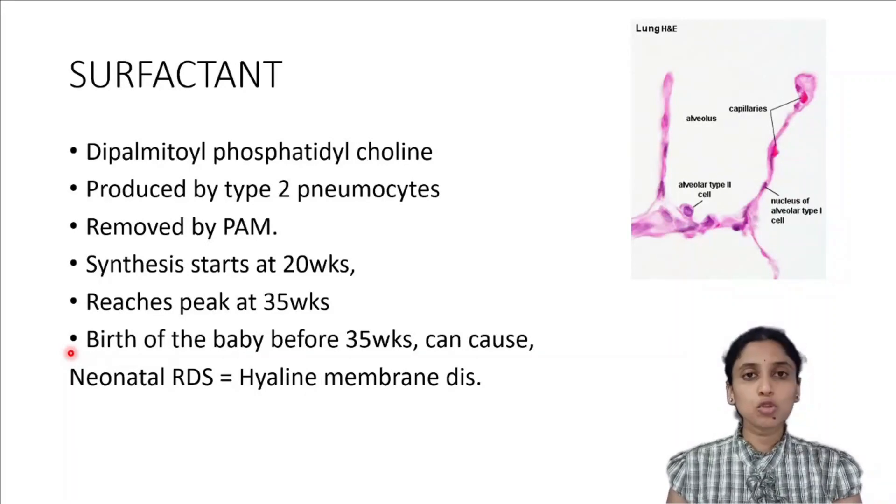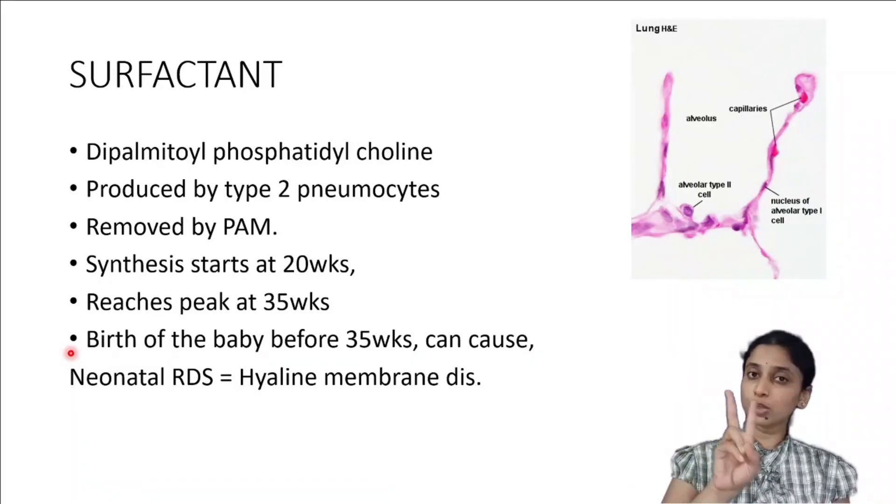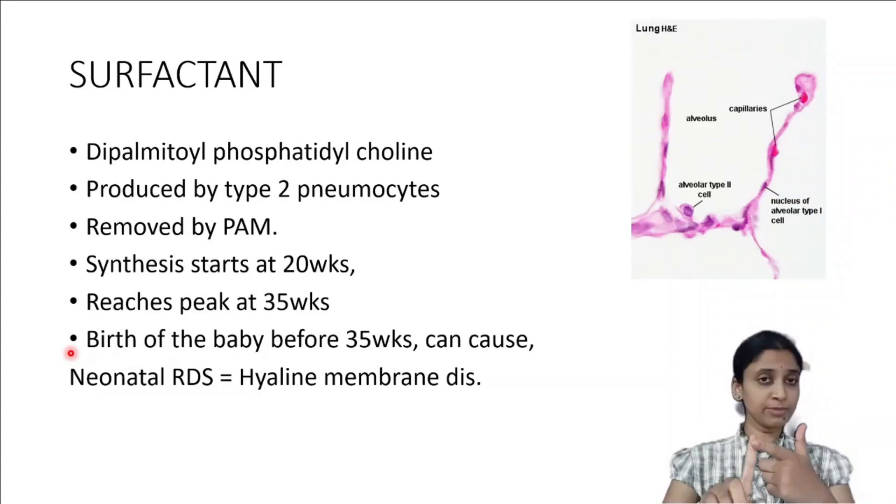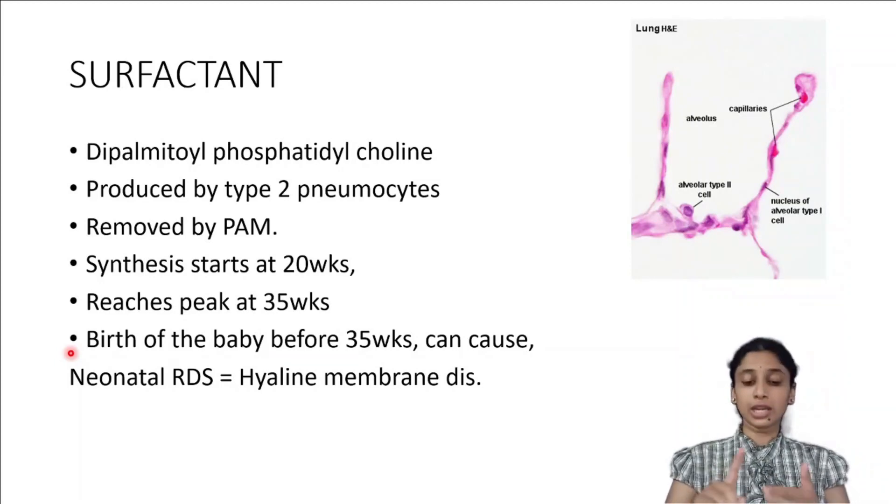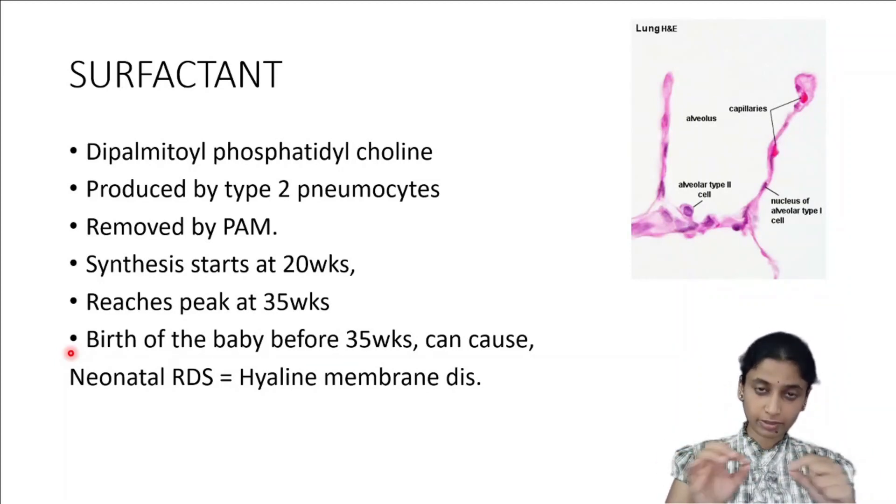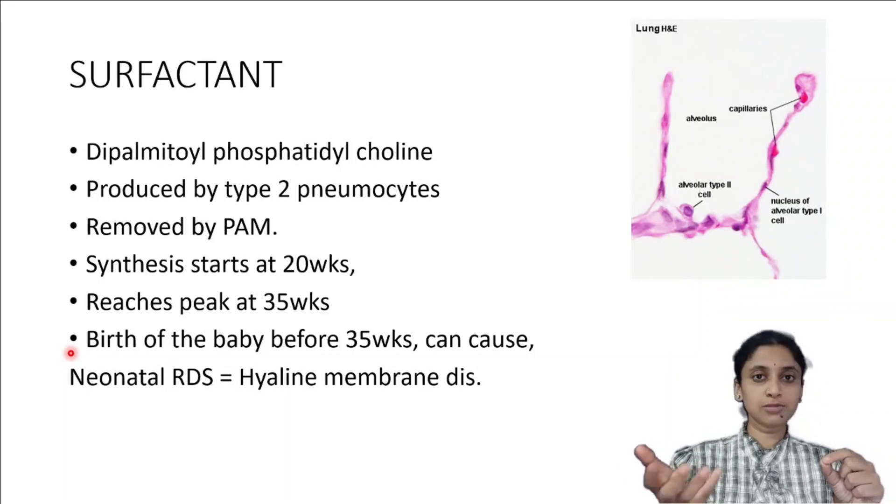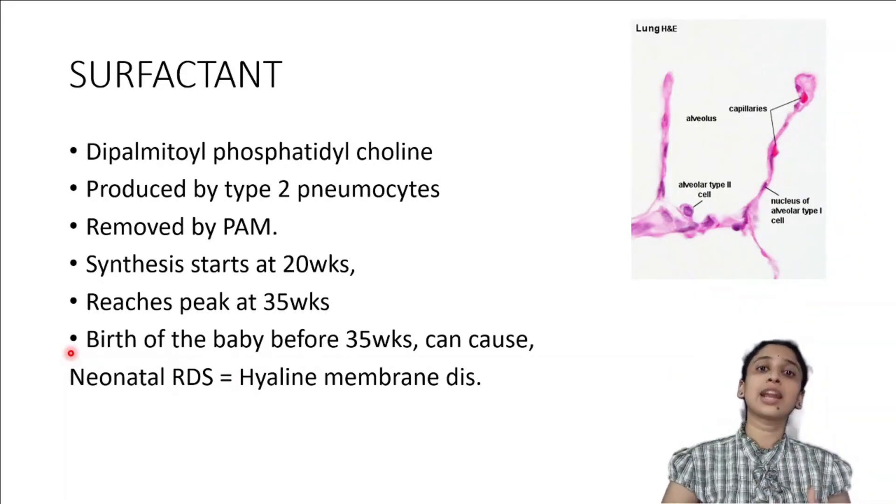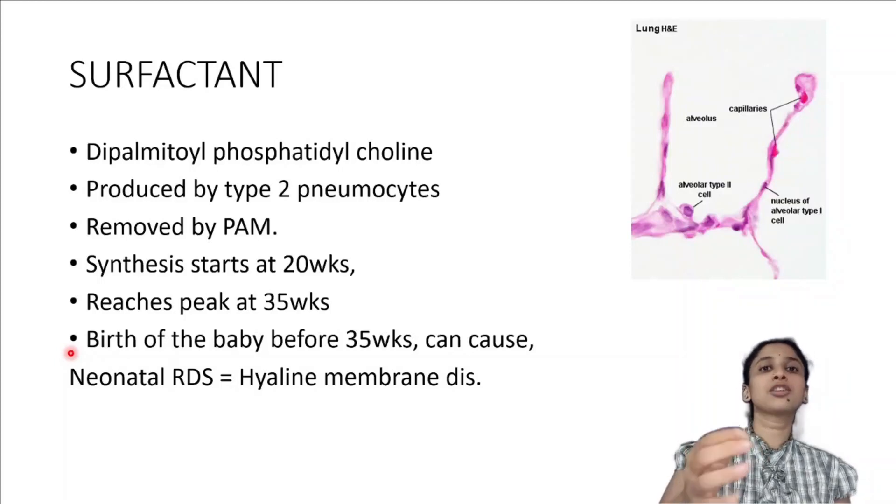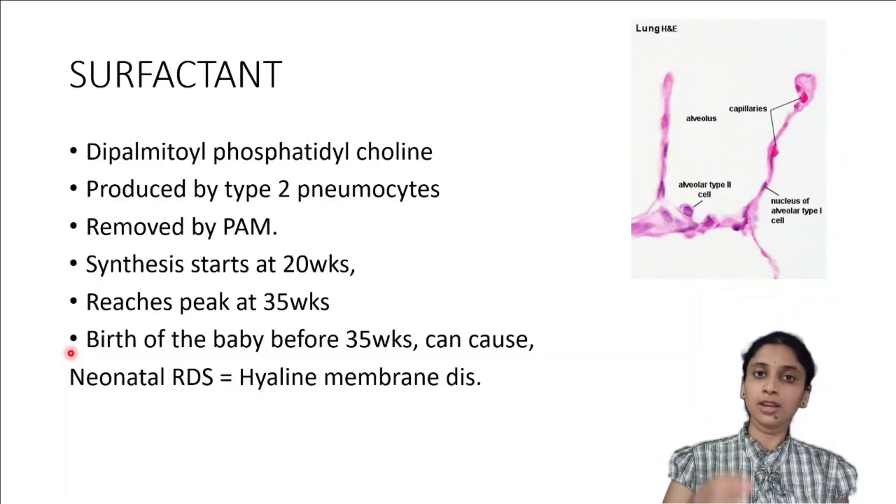Who is going to produce it? It is the type 2 pneumocytes of the alveolus. In the alveoli you have two types of cells: type 1 pneumocytes and type 2 pneumocytes. Type 1 pneumocytes comprise nearly 95% of the cells whereas type 2 pneumocytes are only 5%. Type 1 pneumocytes are slender, very thin, and their function is gaseous exchange. Type 2 pneumocytes have the function of secretion of surfactant.